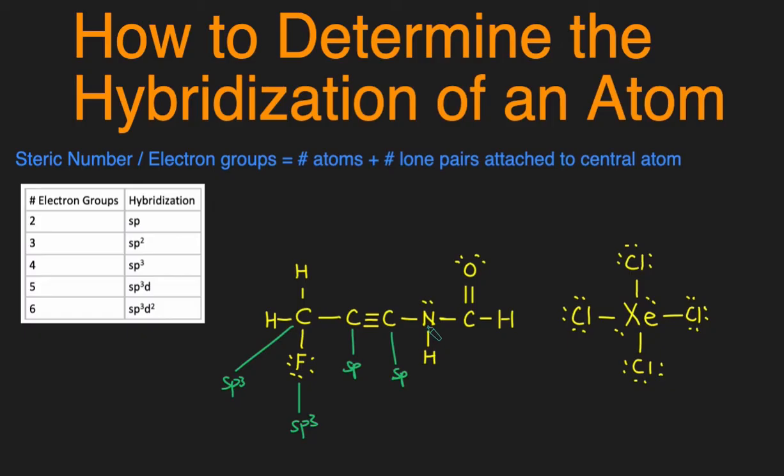This nitrogen right here, it would have 1, 2, 3, 4 electron groups. So its hybridization is also sp3.